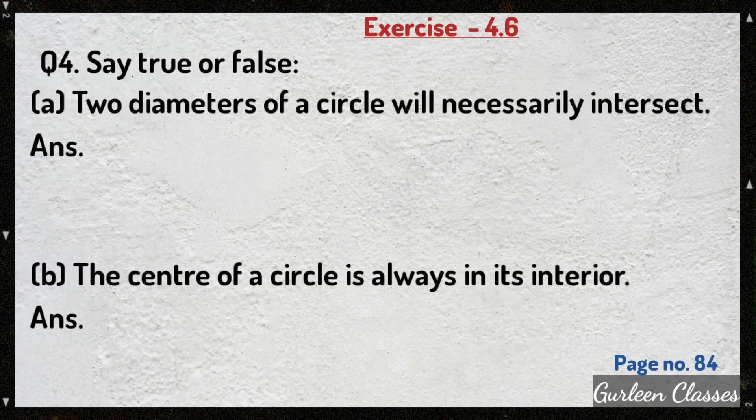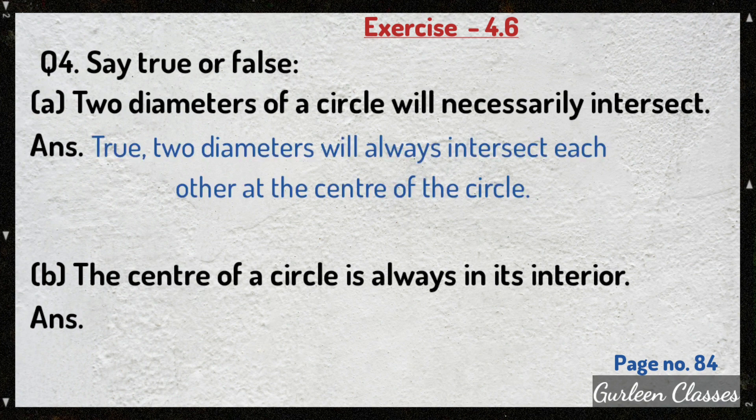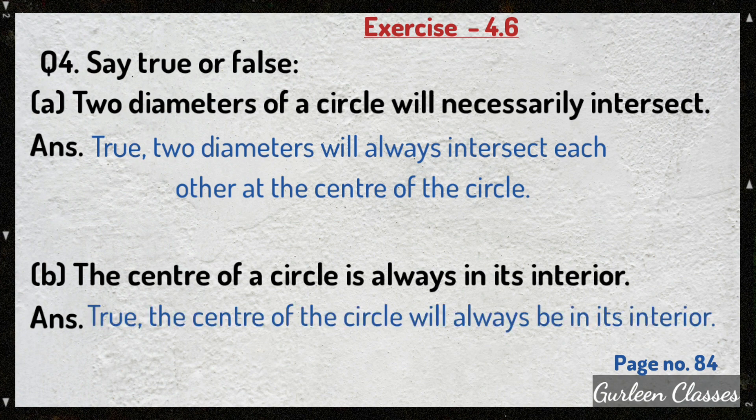Question number 4: Say true or false. Part A — two diameters of a circle will necessarily intersect. True — two diameters will always intersect each other at the center of the circle. Part B — the center of a circle is always in its interior. True — the center of a circle will always be in its interior.